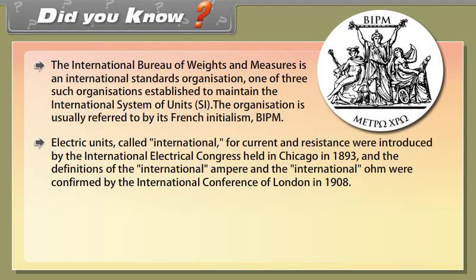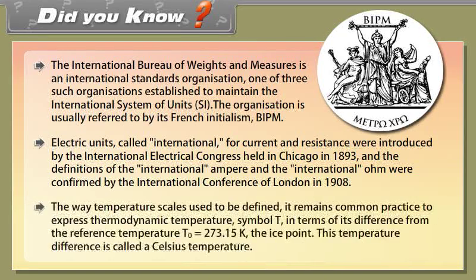The way temperature scales used to be defined, it remains common practice to express thermodynamic temperature (called T) in terms of its difference from the reference temperature T₀ = 273.15 Kelvin, the ice point. This temperature difference is called a Celsius temperature.